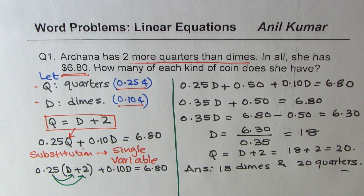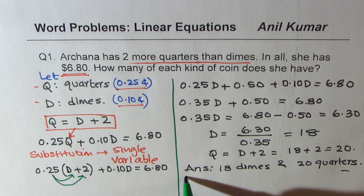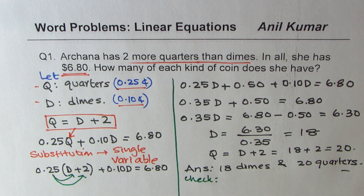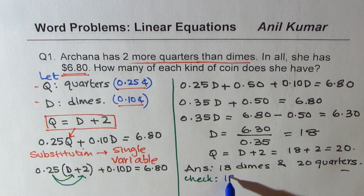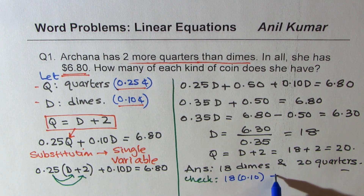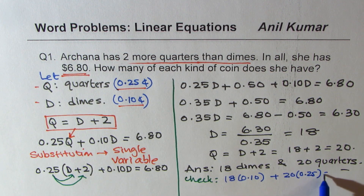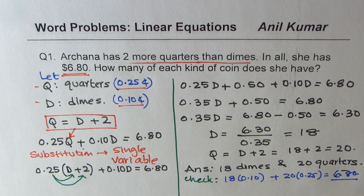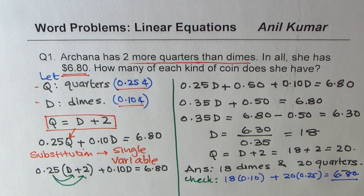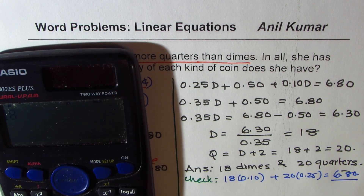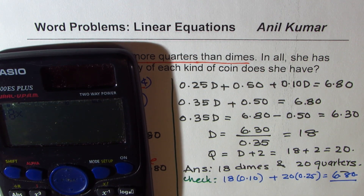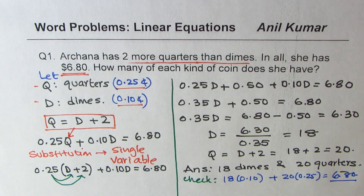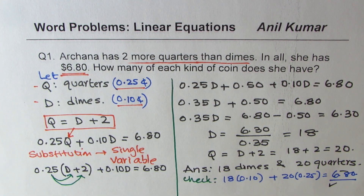At this stage you can check your answer. If you do 18 dimes — that's 18 times 0.10 — plus 20 times 0.25, do you get 6.80? You will. Let's verify: 18 × 0.10 + 20 × 0.25 = 6.80. Perfect, so this is absolutely right.